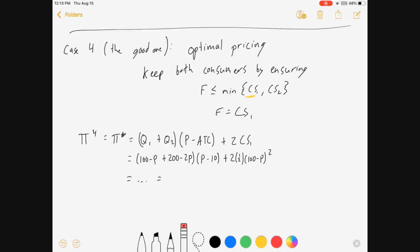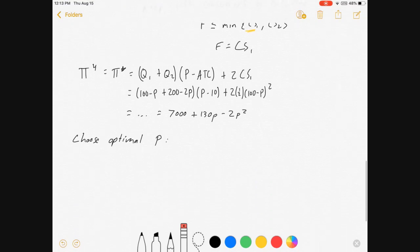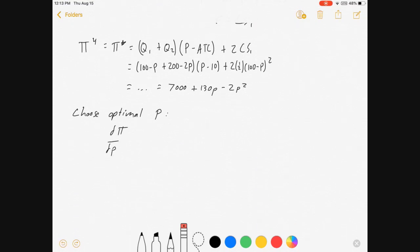As some algebra happens, it comes out to profit = 7000 - 130P - 2P^2. How do we choose the optimal P? Calculus: take the derivative of profit with respect to P. You'll get -130 - 4P, and then you set that equal to zero. There's your first-order condition. That finds the peak of your profit function, and that happens when P = 32.50.